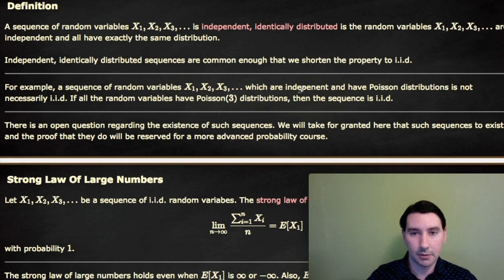By identically distributed, we mean they have the exact same distribution. If x1, x2, x3, and so on are independent and have Poisson distributions, that doesn't mean that they're identically distributed. If they're independent and have Poisson distributions with parameter 3, then they are a sequence of IID random variables. So it has to be exactly the same distributions.